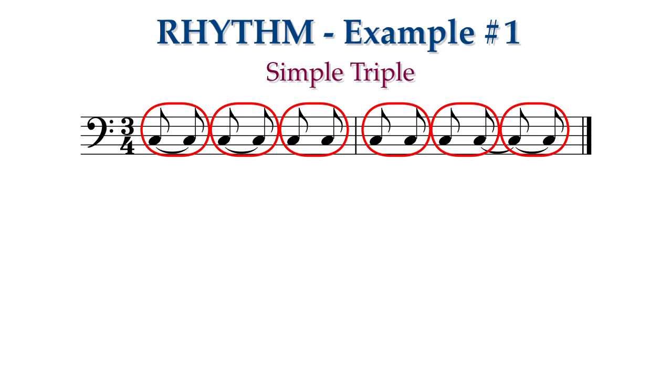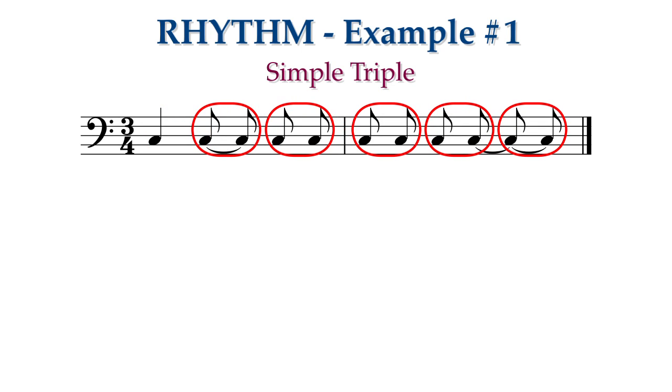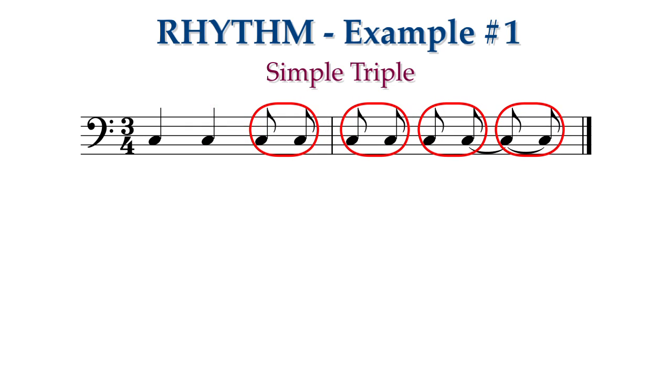Since the first two eighth notes are tied together and belong to the same beat, we do not tie them. We combine them into a single note value, a quarter note. We use the same notation for the second beat. The third beat has two eighth notes that are not tied together, but we show they belong to the same beat by beaming them together.